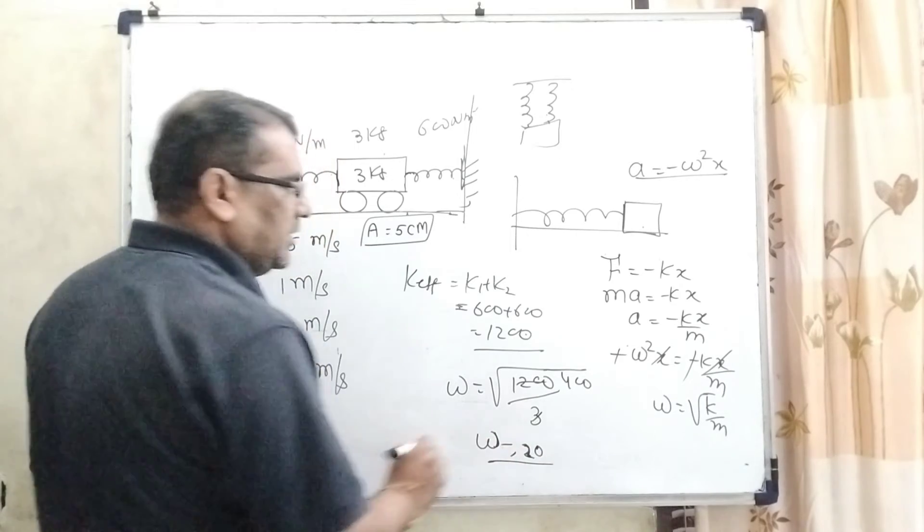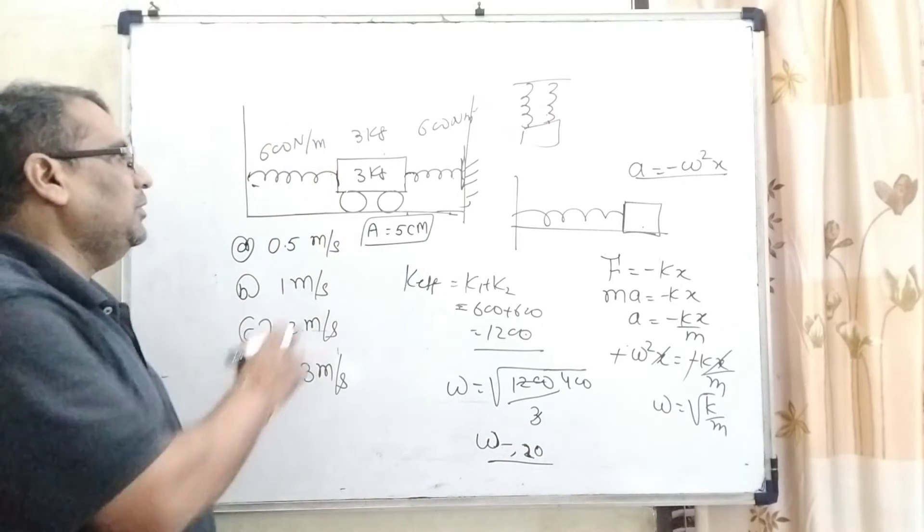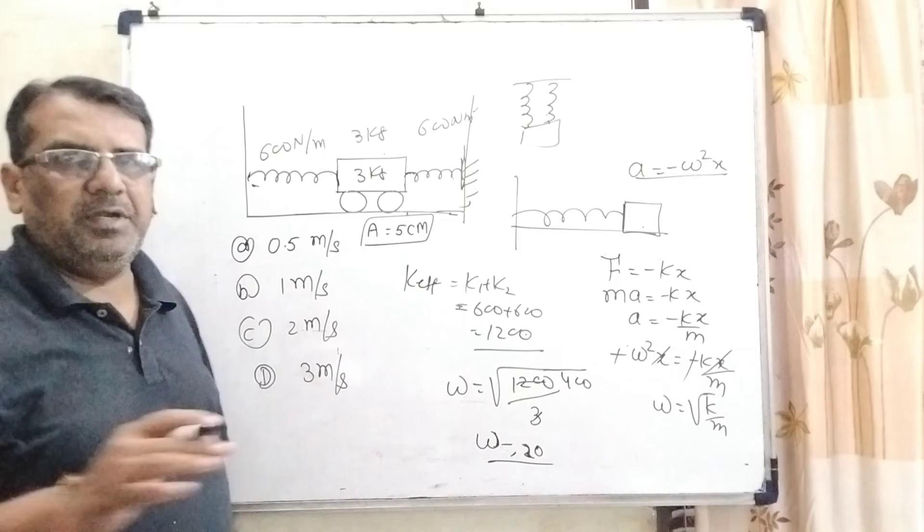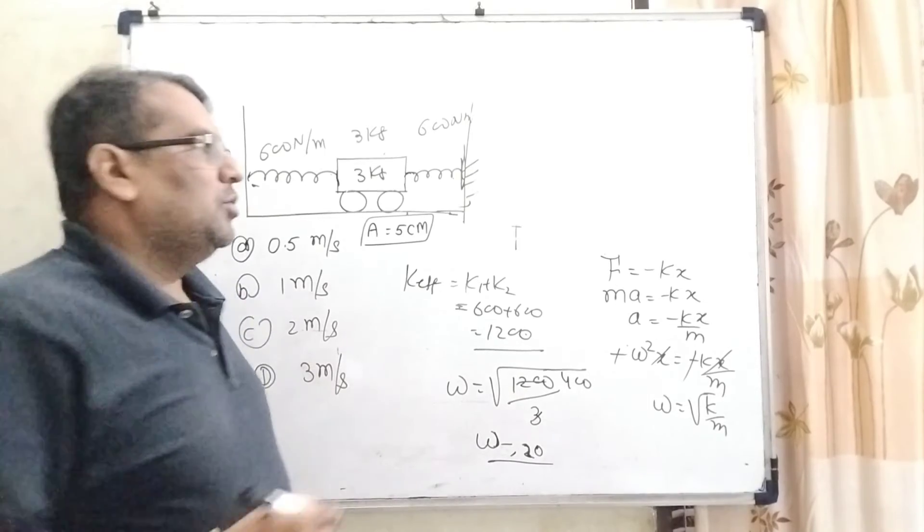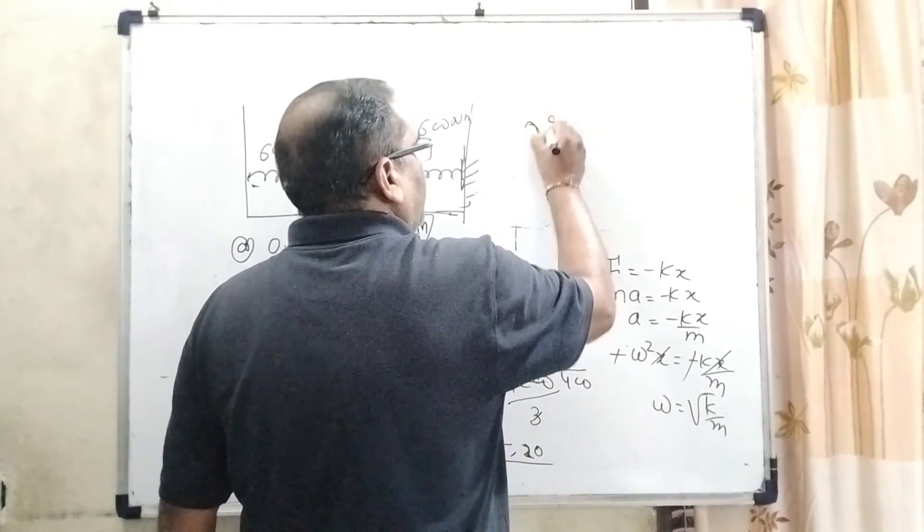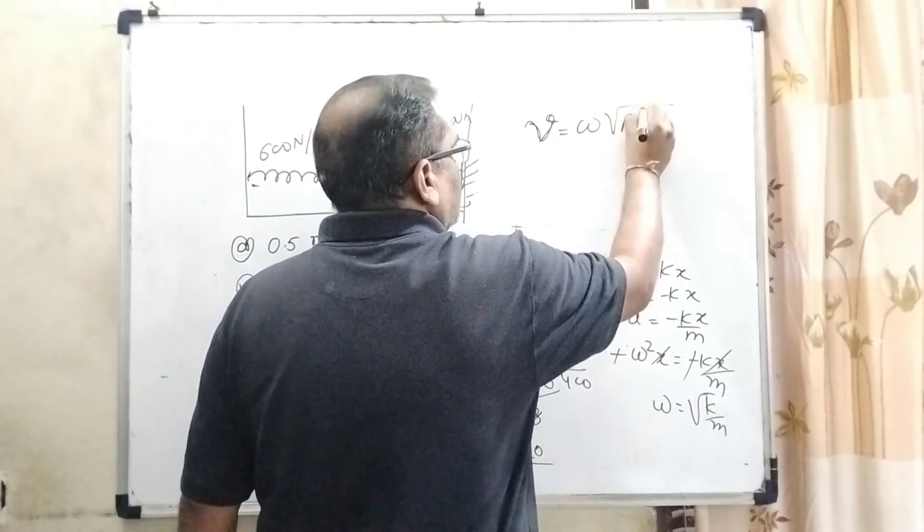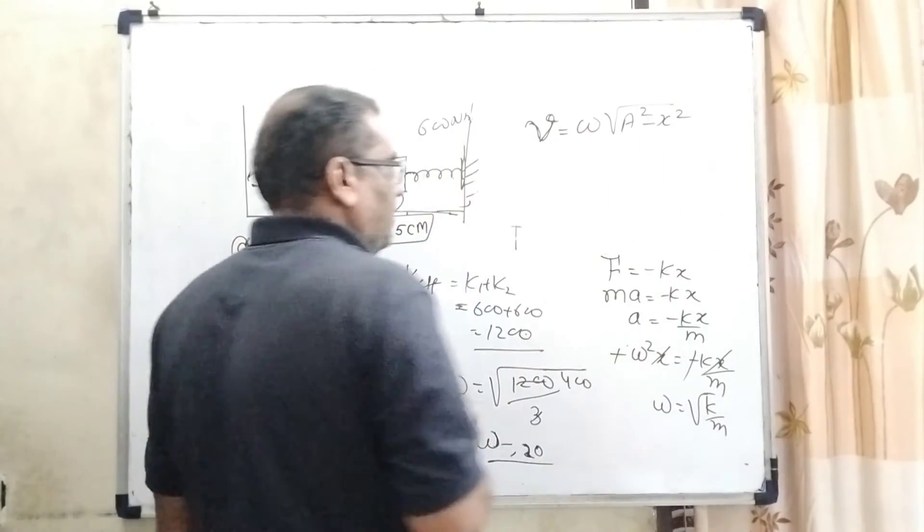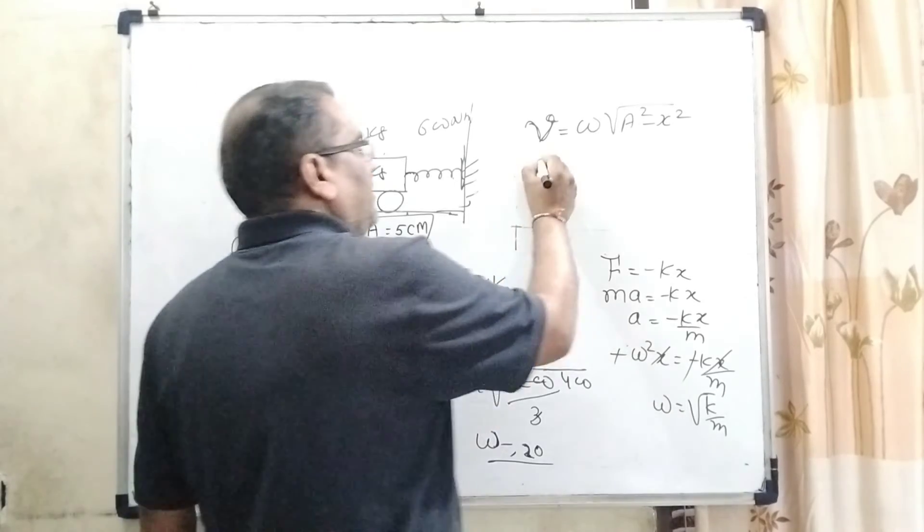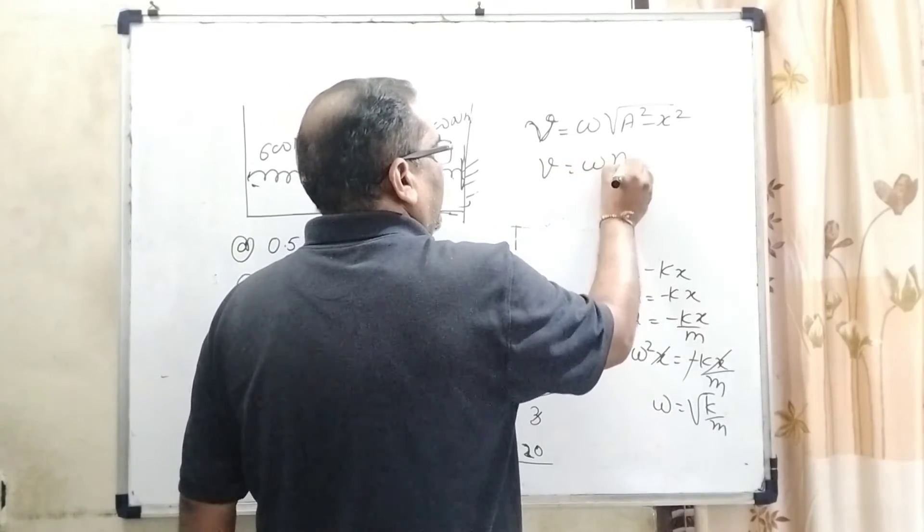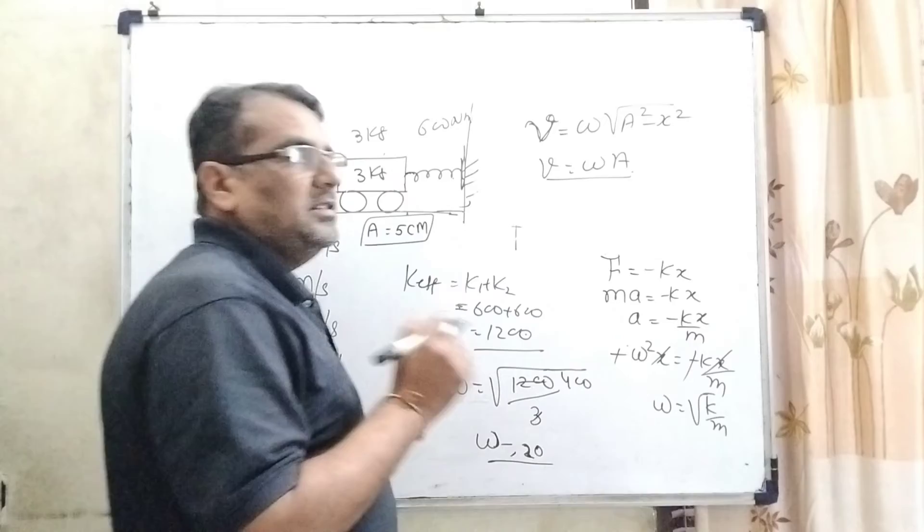Okay, that is the angular velocity. But we have to find out the linear velocity, maximum linear velocity. So what is the formula of velocity of the particle which is oscillating? ω√(a² - x²). For the maximum condition, v = ωa. Here a is the amplitude, ω is the angular velocity.